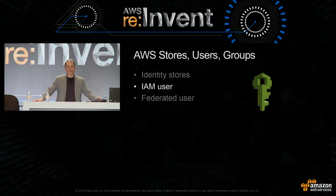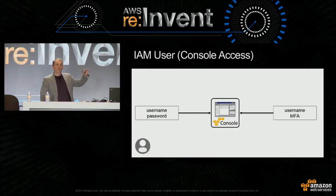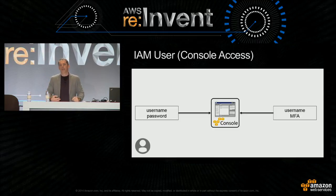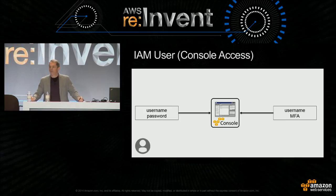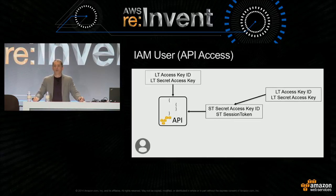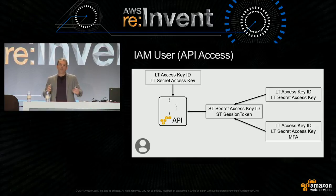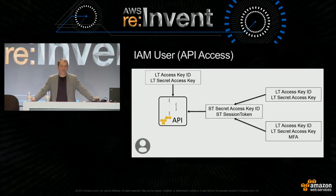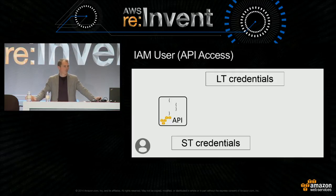Let's talk about users now. It's really helpful to think about the difference between federated users and IAM users based on how they access things. An IAM user is known to the AWS IAM system—you can do access certification against it. An IAM user can use passwords or MFA at the console. At the API level, we typically use long-term access keys, but you can also use long-term access keys to get short-term access keys—maybe to scope down privilege or limit the time that the user has that privilege—and you can use multi-factor authentication in addition. I'll just say long-term credentials and short-term credentials as shorthand.